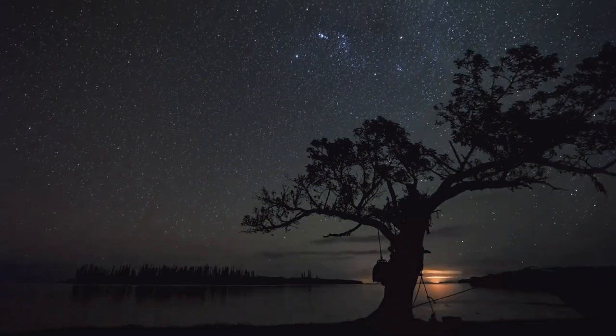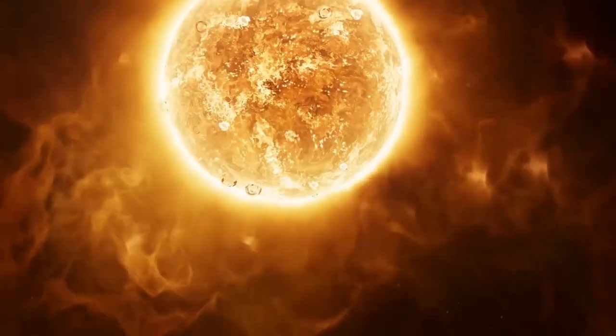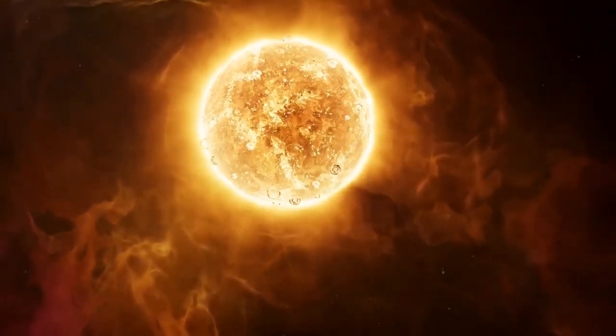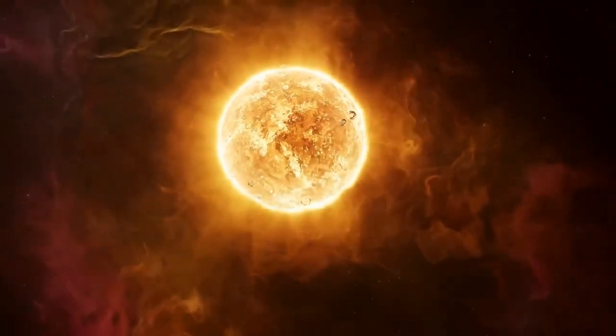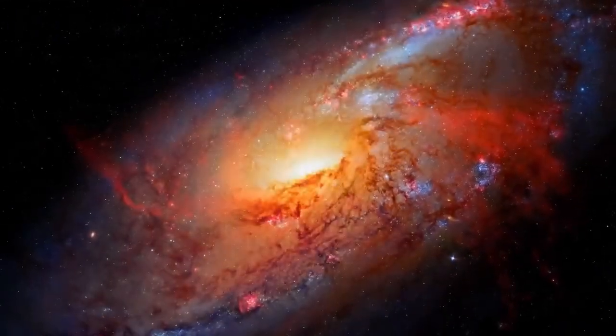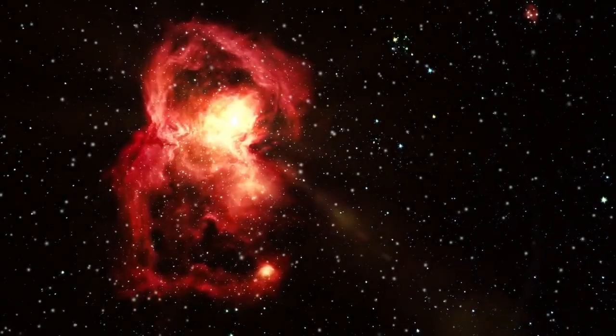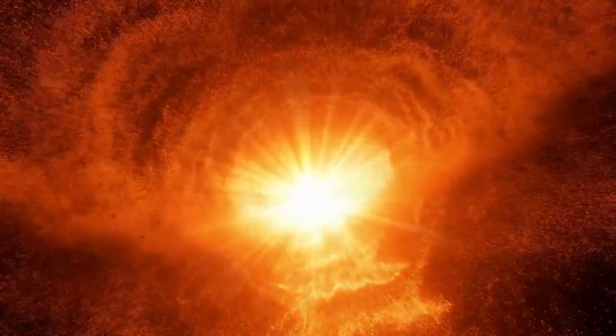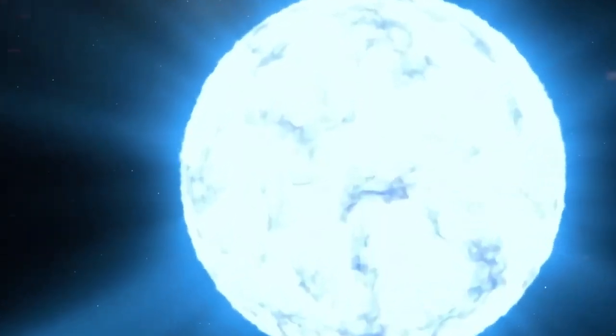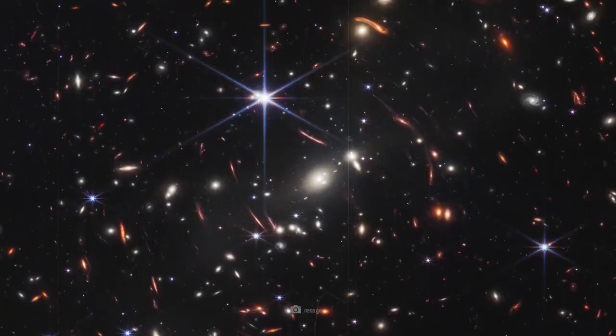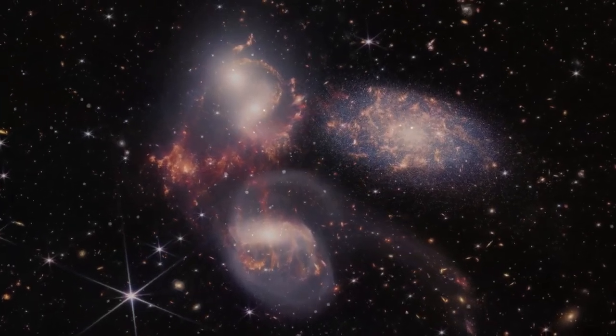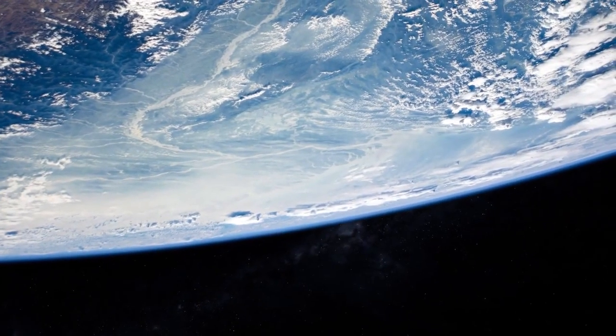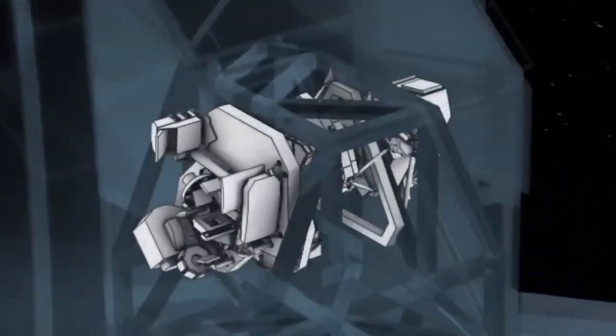According to the Standard Model, which is the basis for essentially all research in the field, there is a fixed and precise sequence of events that follow the Big Bang. First, the force of gravity pulled together denser regions in the cooling cosmic gas, which grew to become stars and black holes. Then, the force of gravity pulled together the stars into galaxies. However, the Webb data revealed that some very large galaxies formed really fast, in too short a time, at least according to the Standard Model. This finding is akin to parents and their children appearing in a story when the grandparents are still children themselves.